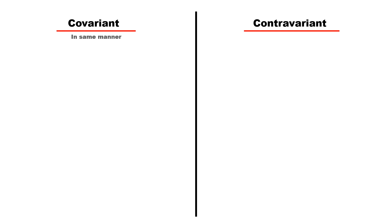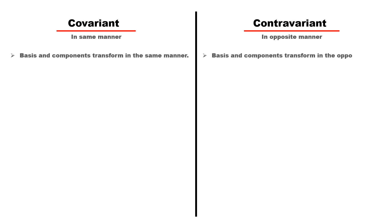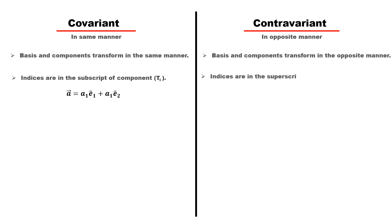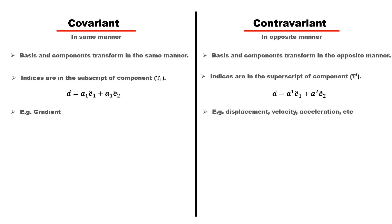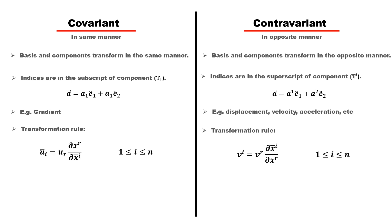To summarize: covariant means transforming in the same manner, whereas contravariant means transforming in the opposite manner. If the basis and component in a tensor transform in the same manner, they are called covariant tensors; if they transform in opposite manner, they are called contravariant tensors. Indices in covariant tensors are written in the subscript of components, while in contravariant tensors they are written in the superscript. The gradient is a covariant tensor, while displacement, velocity, and acceleration are contravariant tensors. The transformation rules for both are given accordingly.